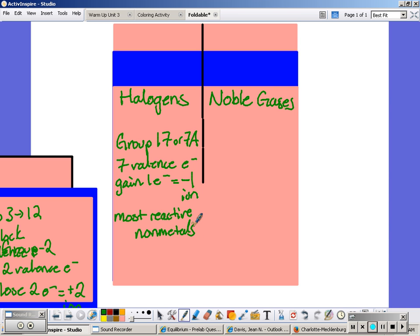Noble gases are group 18 or 8A. Because they have eight valence electrons, they have a full outer shell so they do not react.